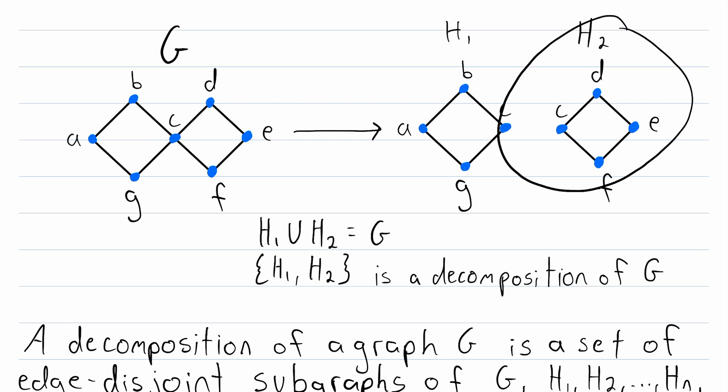As another example, if our subgraph H2 had included this edge that joins C and G, then this would not have been a valid decomposition, because these two subgraphs are no longer edge disjoint. They have this edge in common, the edge that joins C and G.